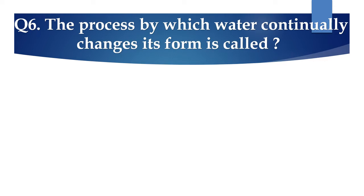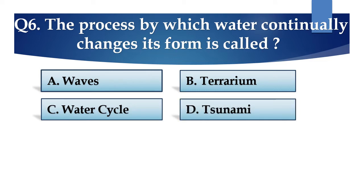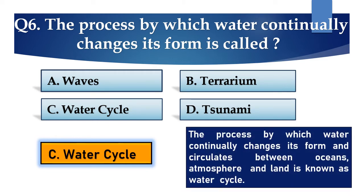Question number 6: The process by which water continually changes its form is called water cycle. The process by which water continually changes its form and circulates between oceans, atmosphere, and land is known as the water cycle.